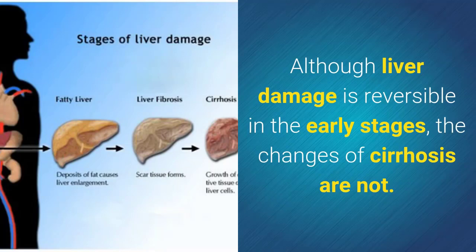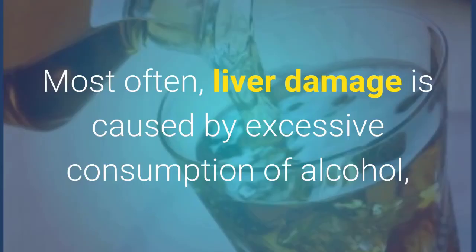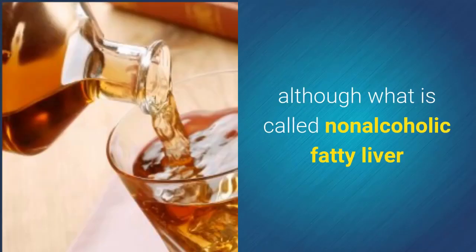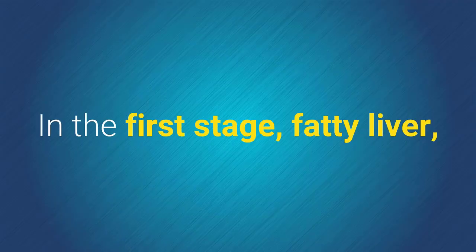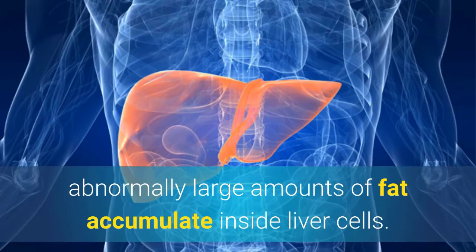There are four stages of liver damage known as fatty liver, hepatitis, fibrosis, and cirrhosis. Although liver damage is reversible in the early stages, the changes of cirrhosis are not. Sometimes fibrosis and cirrhosis are considered as one stage, making three main stages altogether.